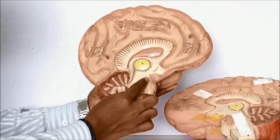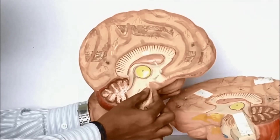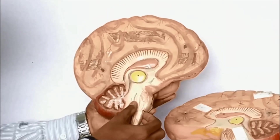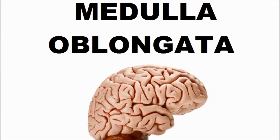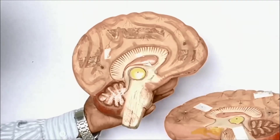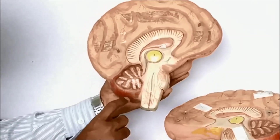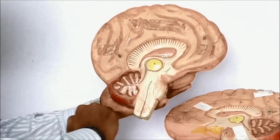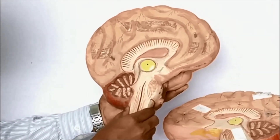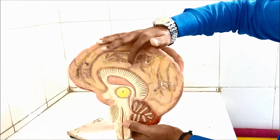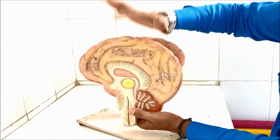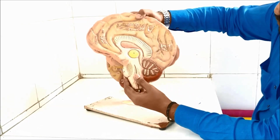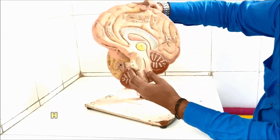The medulla oblongata is considered the most important part of the brain because it controls all involuntary functions like circulation, respiration, and digestion. A small or sudden injury to the medulla oblongata can result in the death of the person. It extends as the spinal cord.